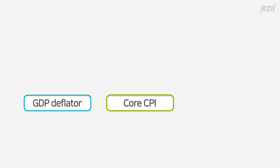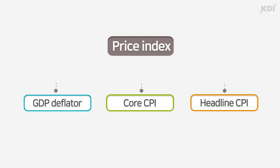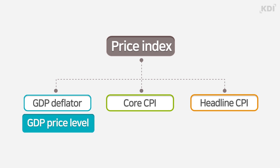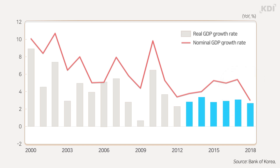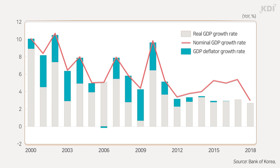Like the core and headline CPI, the GDP deflator is an indicator for the changes in prices and shows the GDP price level. Since 2013, the nominal GDP has been highly volatile, taking a sharp downturn in recent years, while the real GDP has remained stable. This is due to the GDP deflator growth rate.